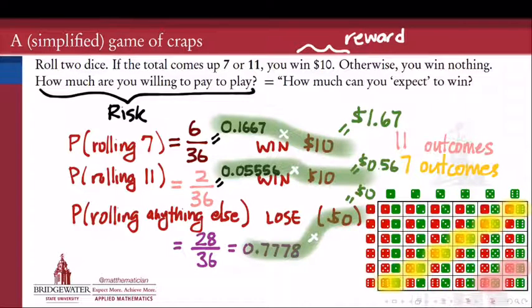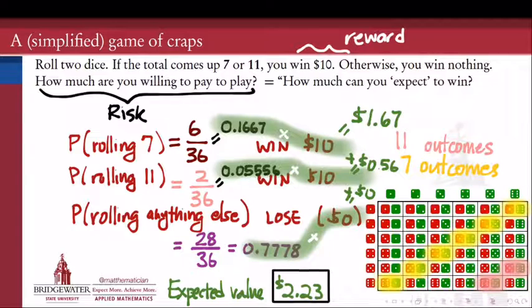And then, how do we get the expected value out of that? Now that we've done all the multiplying? Yeah. The expected value we would get just by adding $1.67 plus 56 cents plus 0. And that's going to come up with $2.23.